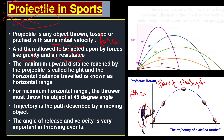The maximum upward distance covered by the projectile is called height. The horizontal distance traveled is known as horizontal range. For maximum horizontal range, the thrower must throw the object at a 45-degree angle. Different angles cover different distances: at 45 degrees, maximum horizontal distance is covered.